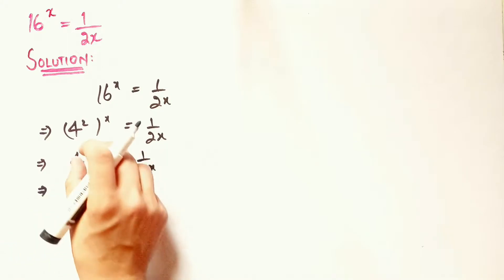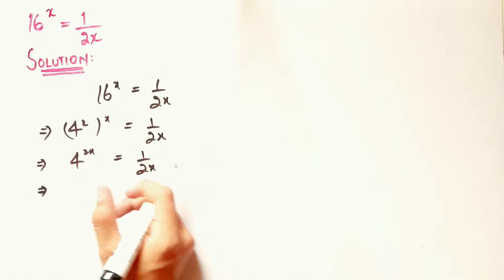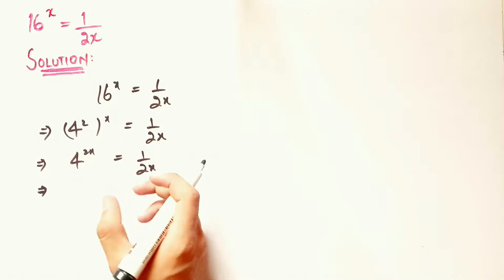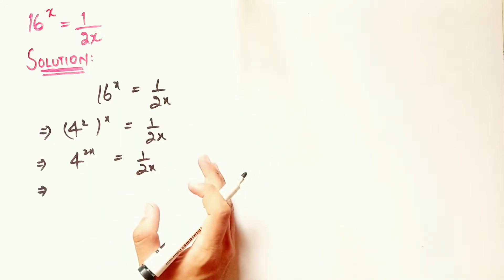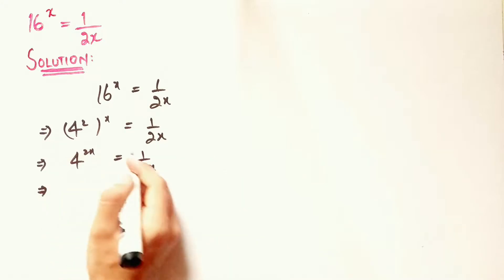Now, if I want to remove this 2x power from 4 and to have x on one side of the equation, what I have to do is take the 2x root on both sides of the equation. That will remove x from the left hand side.